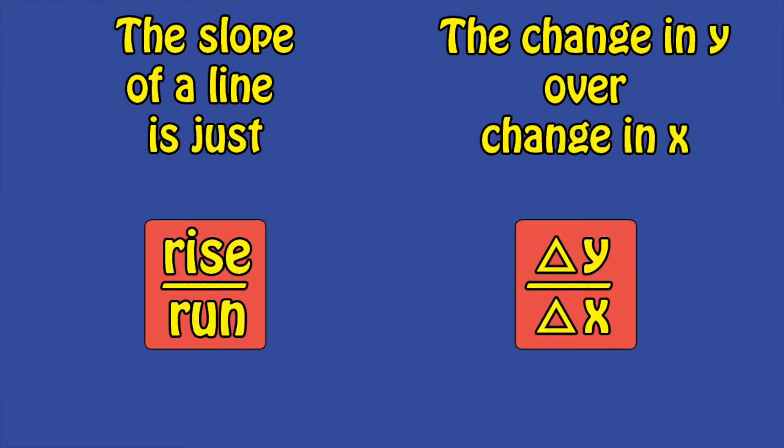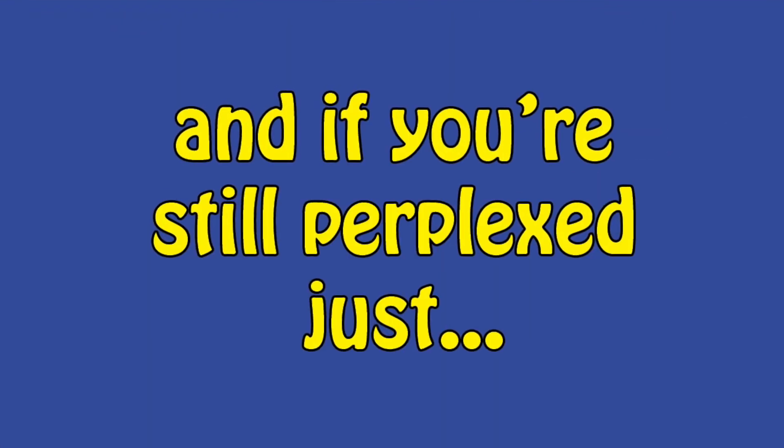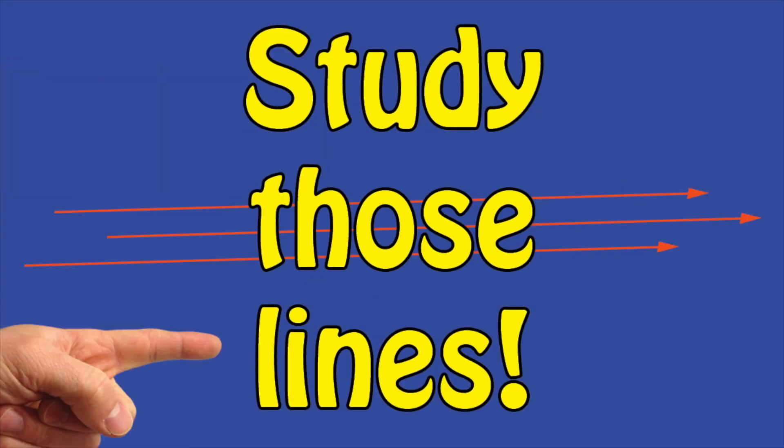The slope of a line is just rise over run, the change in y over change in x. And if you're still perplexed, just study those lines. And that's it, folks. See you next time.